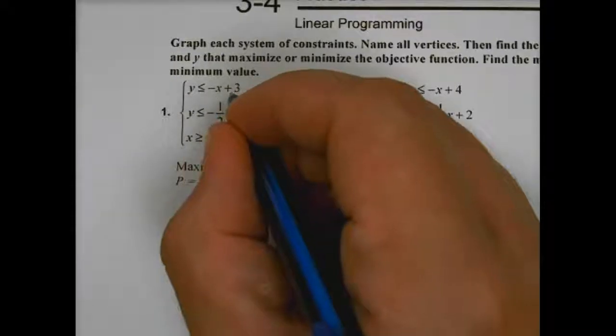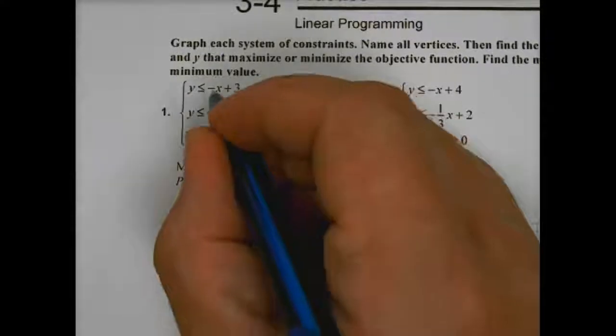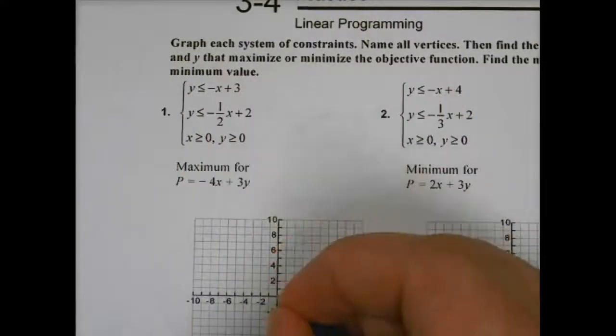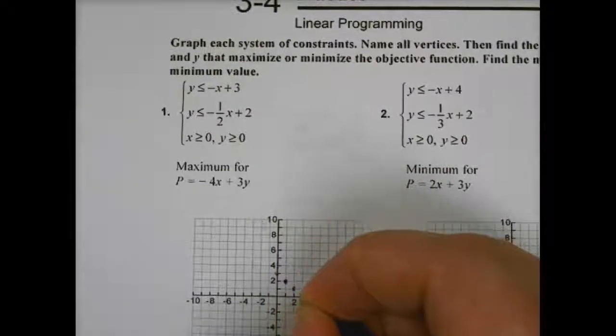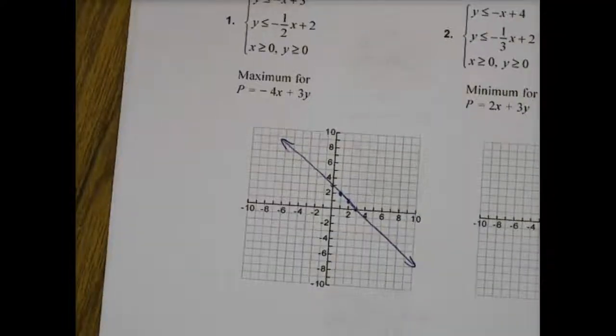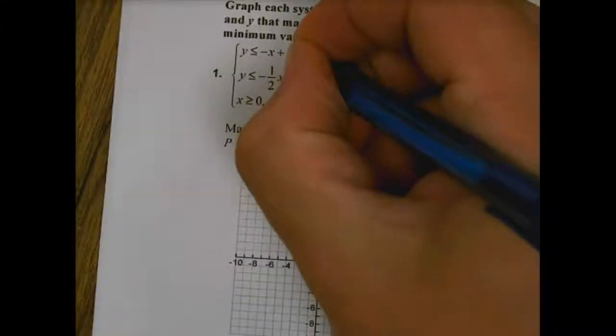We have y equals negative x plus 3. We have a y-intercept of 3 and we have negative x. So I would cross at 3. Negative x would be going down like that. So this line would be there. Alright, so that is that first line.